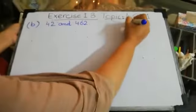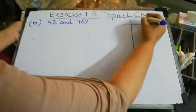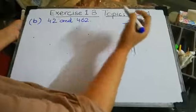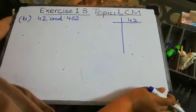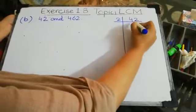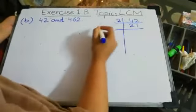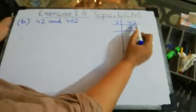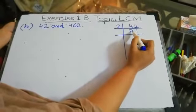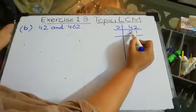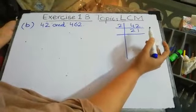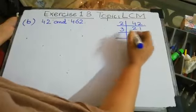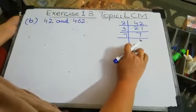We will make the factors first of all. Starting with factors of 42. As always, we will start with the smallest number, that is 2. Now 21 is not an even number, it is not a multiple of 2, so we check with 3. 2 plus 1 is 3, and 3 is a multiple of 3, so this whole number is a multiple of 3. So 3 times 7 is 21, and 7 times 1 is 7.